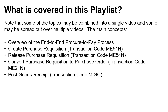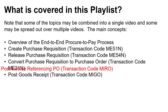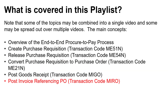However, for the sake of completeness and continuity, we'll also include the following Accounts Payable steps in this playlist: Post an invoice referencing a purchase order, Transaction Code MIRO, and Post Payment, Transaction Code F110.